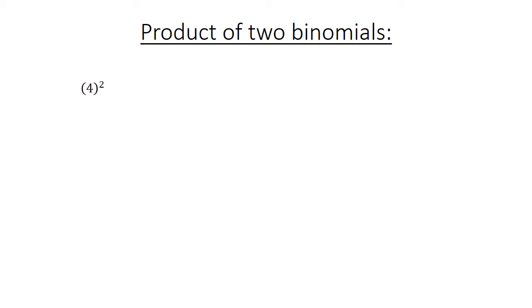The product of 2 binomials. In brackets: 4 to the power of 2 equals 4 times 4, which equals 16. Similarly, 2 in brackets: a to the power of 2 equals a times a, which gives 2a to the power of 2.